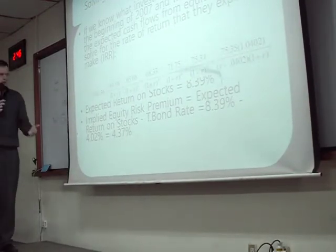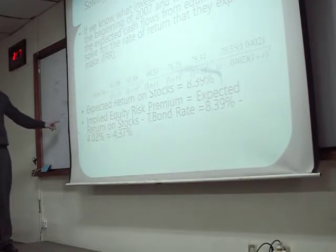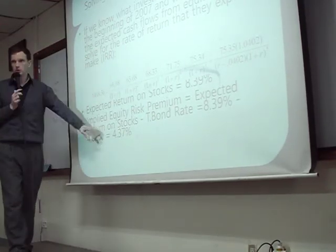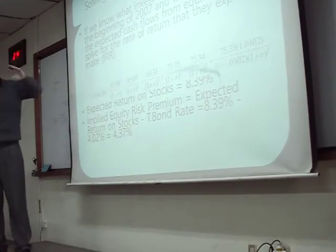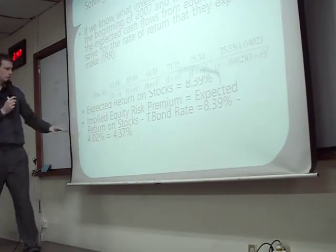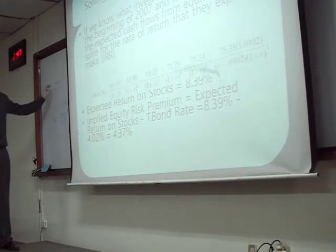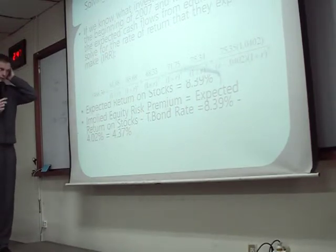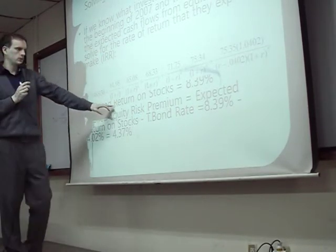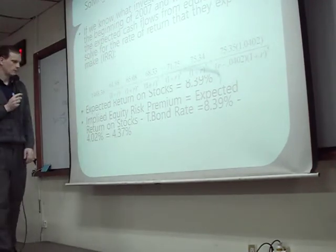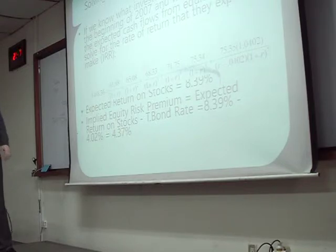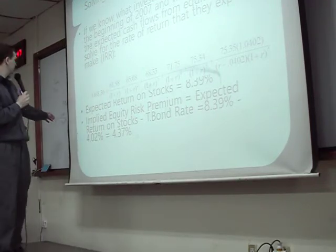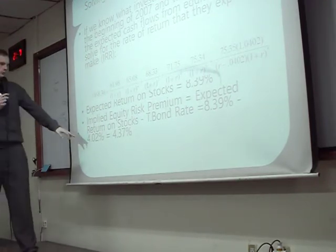We're going to need a computer program to do that calculation — it's not easy. We could set this up, but finding the number for R here requires a computer program. You don't need to be able to do this calculation; I just want you to know where it comes from. We're finding R just like we did before — we know the present value, we know our cash flows, we know future value, find R, find the interest rate.